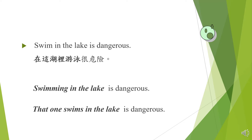怎麼辦呢？第一種改法是把 swing 改成動名詞 swimming，讓它變成動名詞片語，符合主詞的條件，這樣也可以減少一個動詞，只剩下主要動詞 is。第二種改法是把它變成兩個子句，在 swim 前面加上連接詞，再加一個主詞，改成 that one swims in the lake is dangerous，這樣就不會造成重大的英文文法錯誤了。